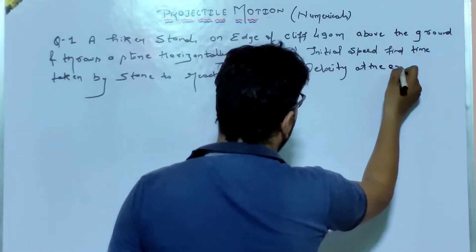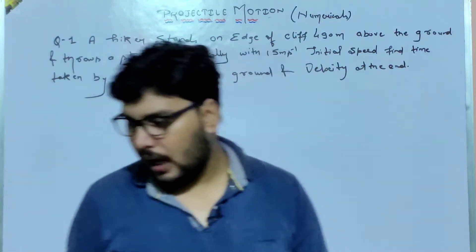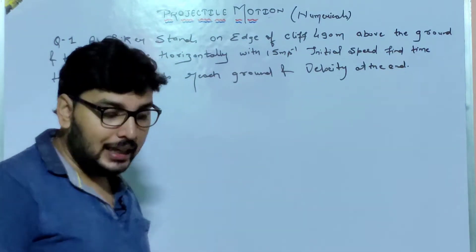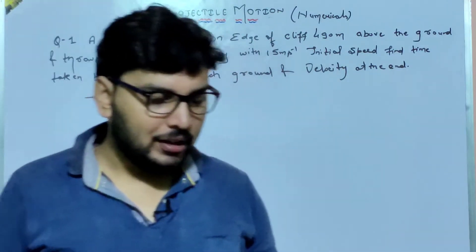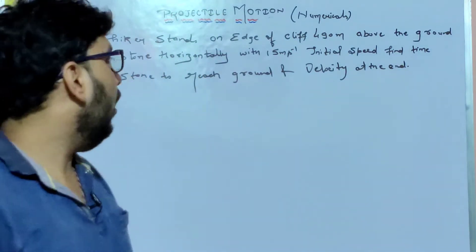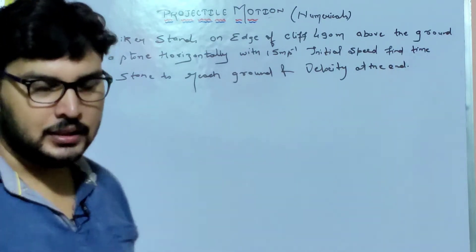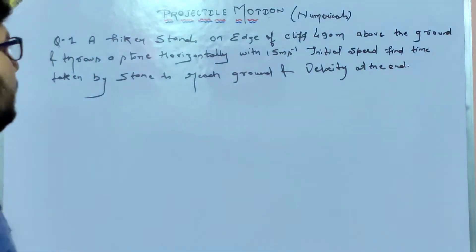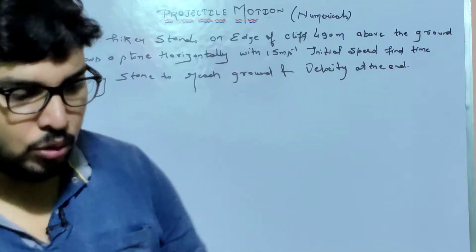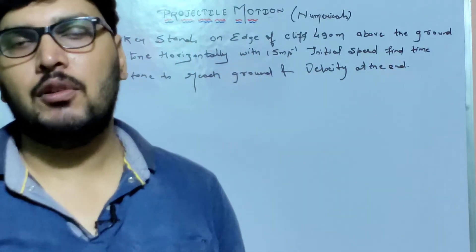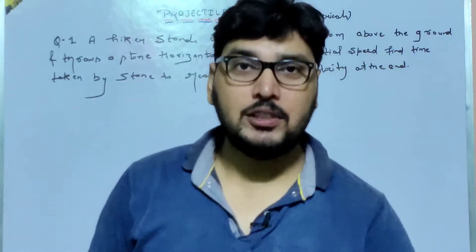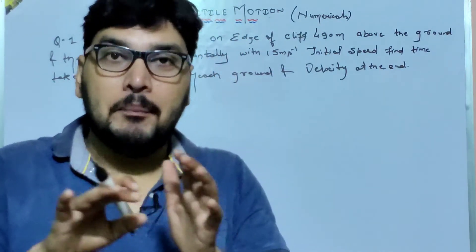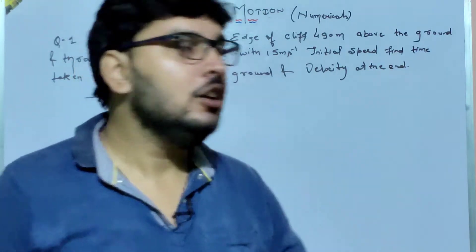Two things are to be calculated in this numerical: one is the time taken by the stone, and second is the velocity at the end. Now let's understand the question — the hiker stands on the edge of a cliff, which you can consider like a hill, 490 meters above the ground, and throws the stone horizontally. Since the stone is thrown horizontally, it will not have any initial vertical component, and we will deal with this on the basis of projectile motion parallel to the horizontal surface.